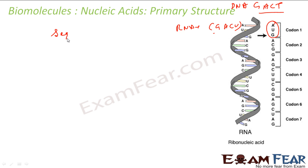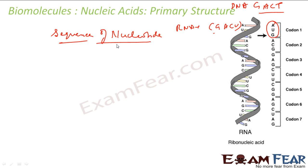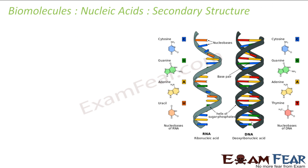The primary structure is the sequence of nucleotides, and each sequence represents one piece of information. This sequence is responsible for the unique character of an organism and has a direct impact on the functioning of living organisms. It also helps in identifying parents of a child, since a parent passes on nearly the same sequence to their offspring.